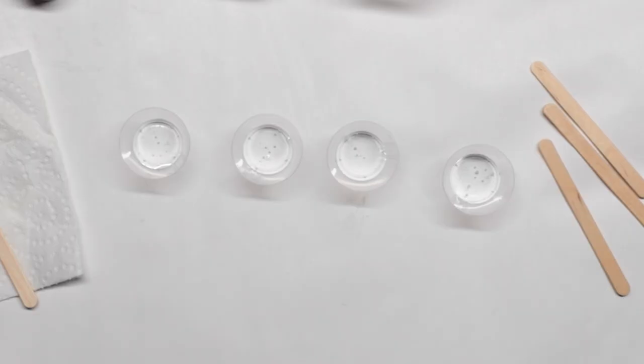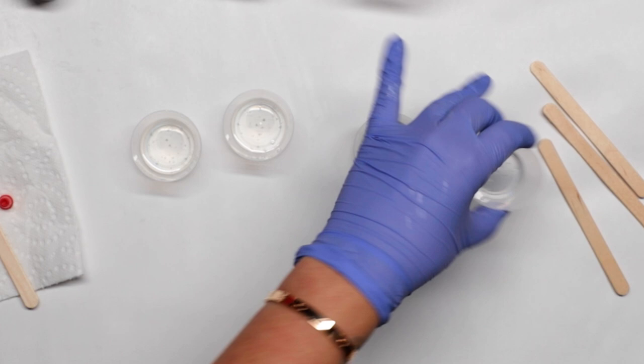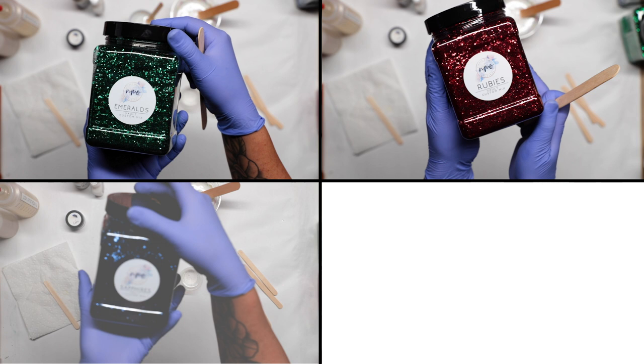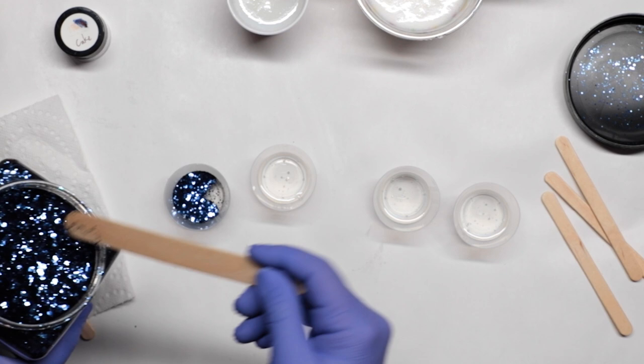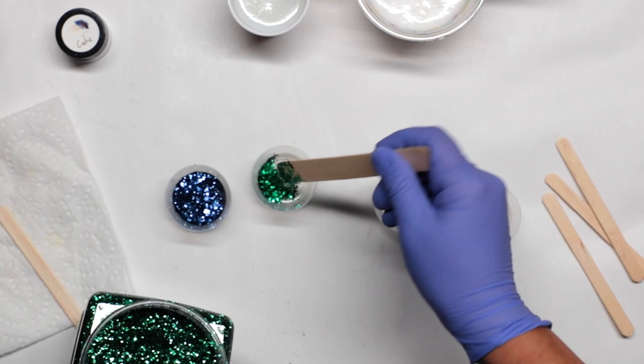We are combining our leftover epoxy into our four medicine cups. We have four glitters. This is the Henry VIII: our emeralds, our rubies, our sapphires, and our diamonds. I want this very dense, very jelly-like. I don't want it to be runny. I want it very thick.